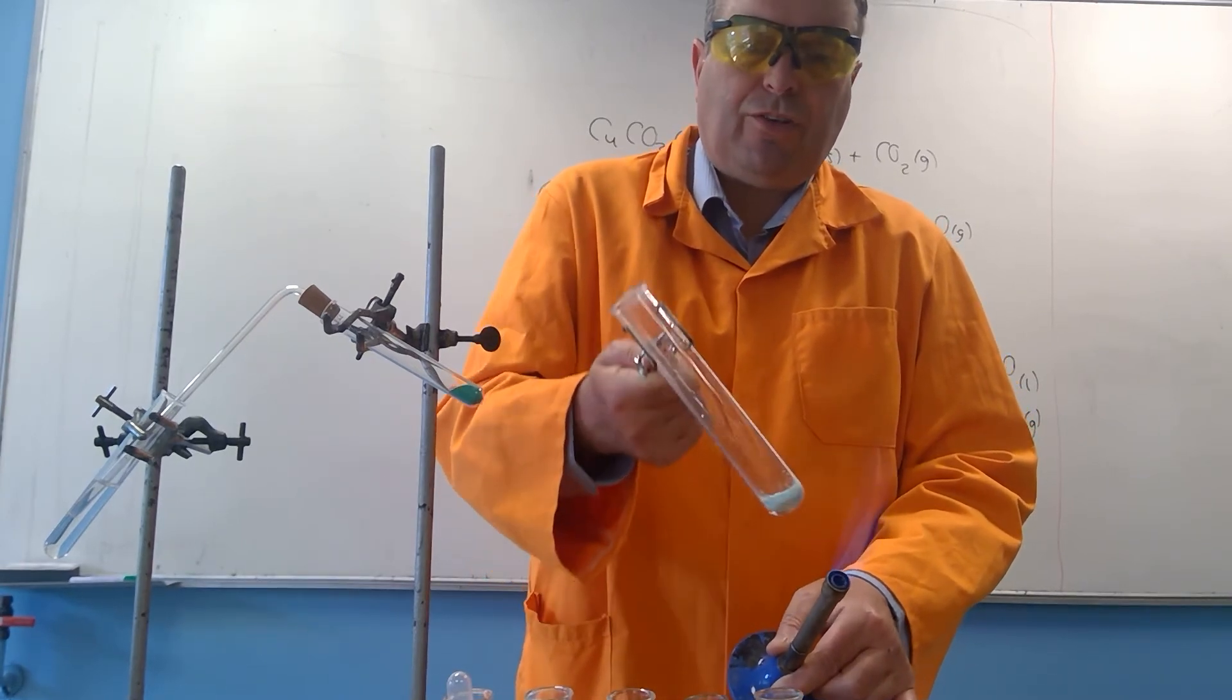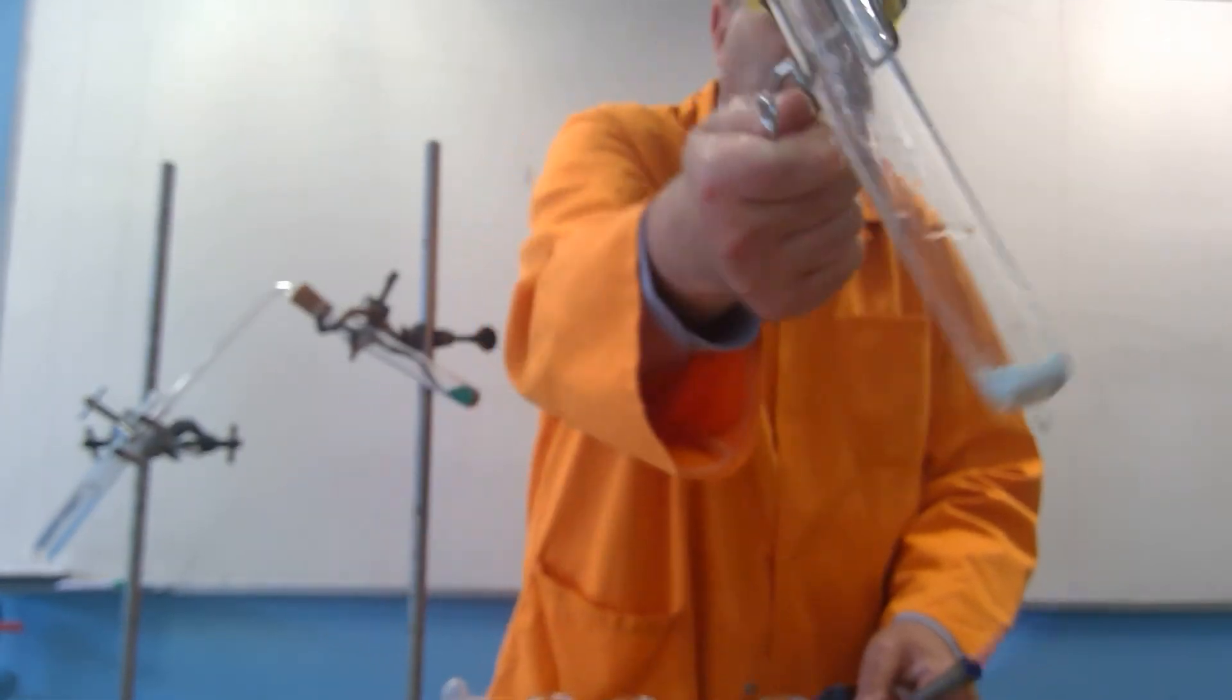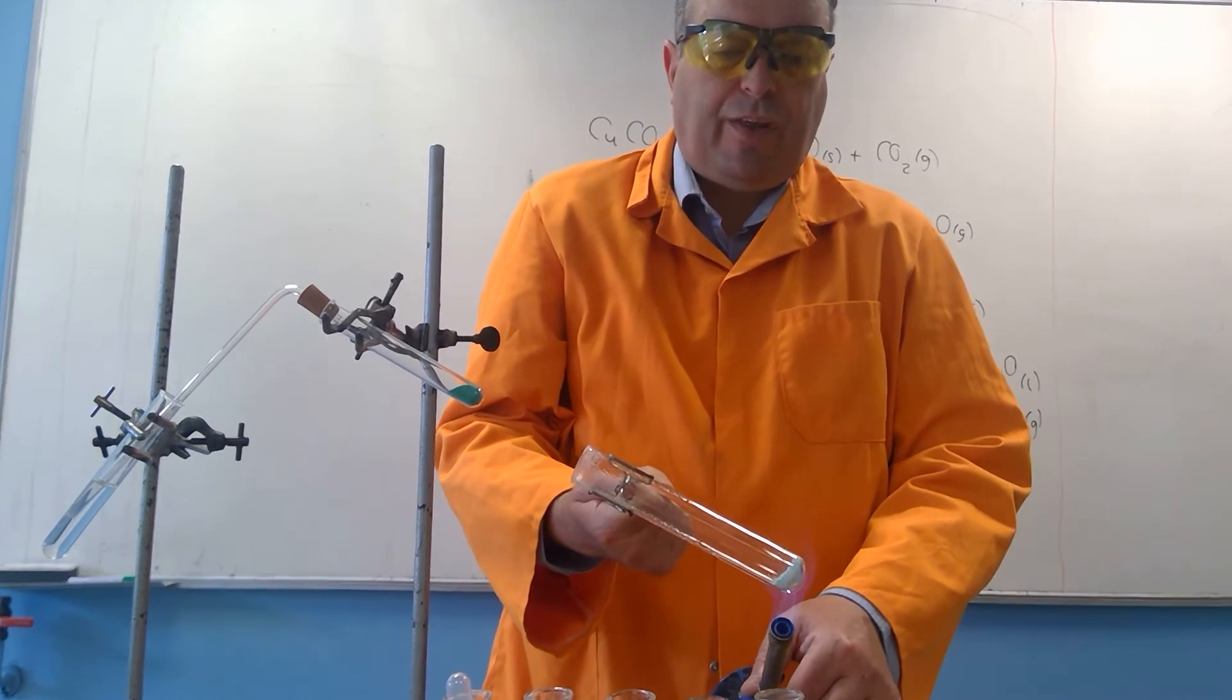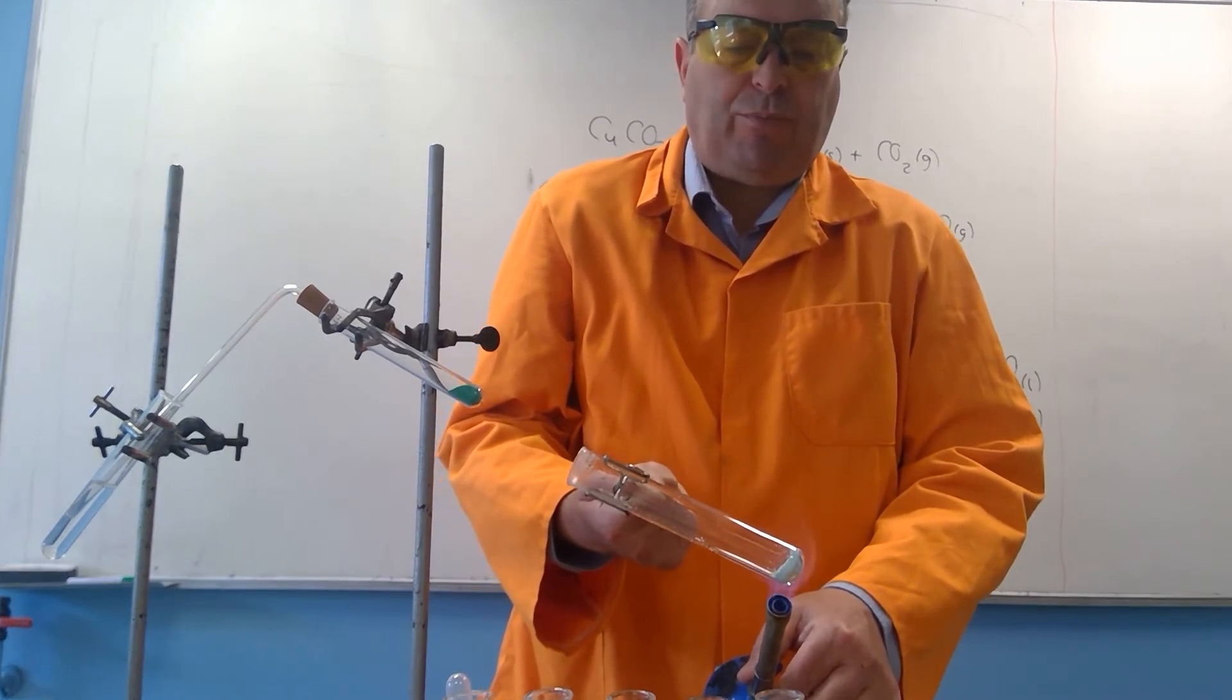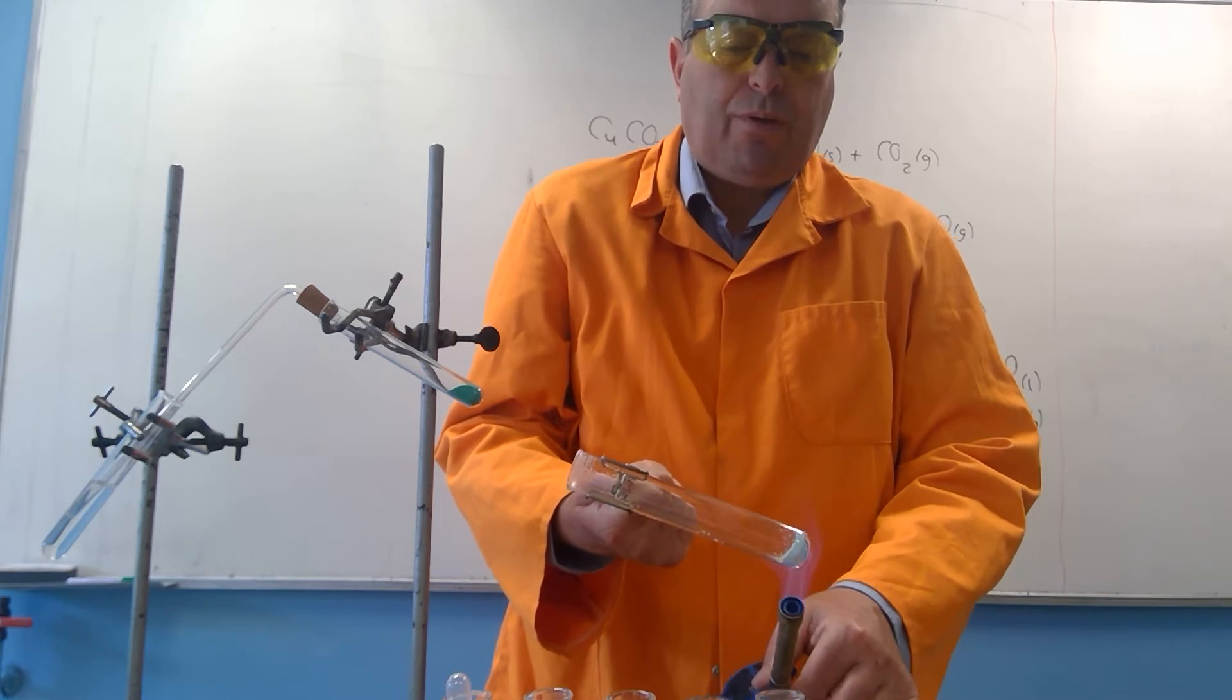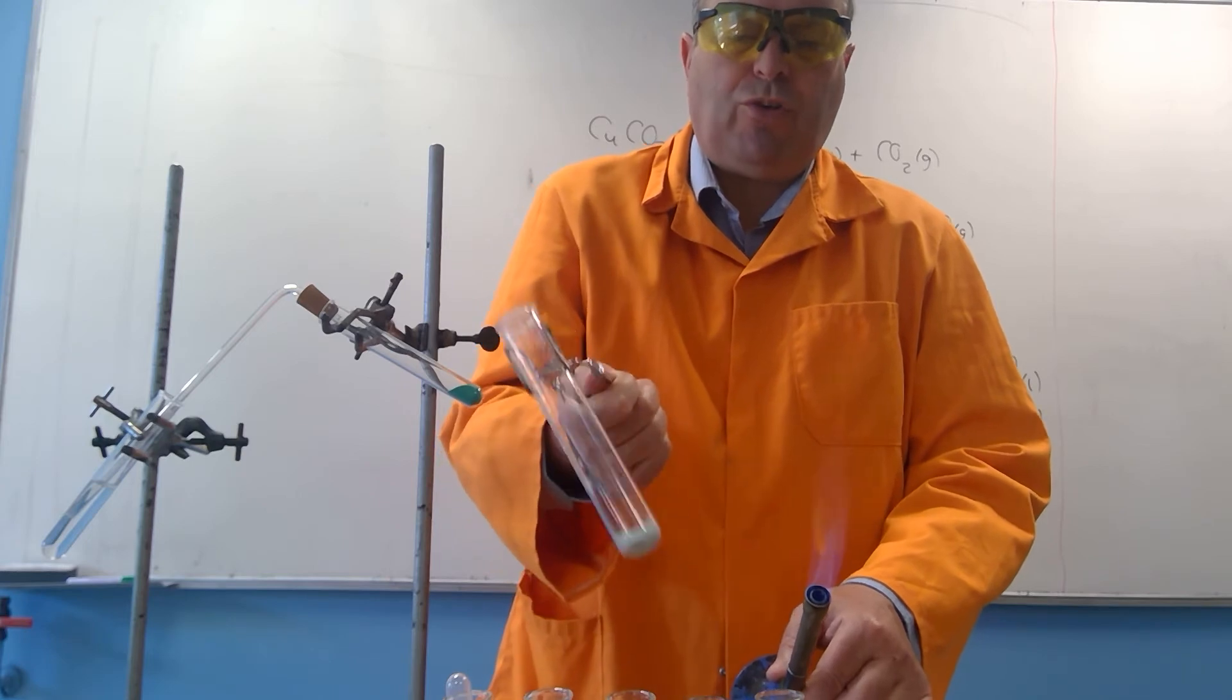Now you probably can't see it, so I'll go a little bit closer to the camera. There's condensation at the top of the tube—that's water. You can test for that by adding white anhydrous copper sulfate and it will go back to blue, or the blue cobalt chloride paper which goes pink in the presence of water.